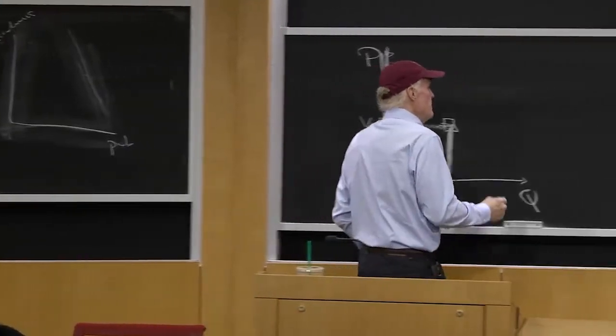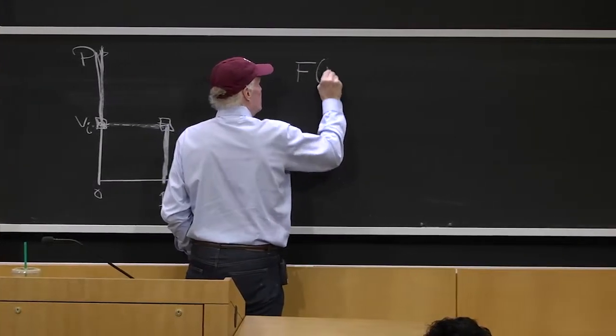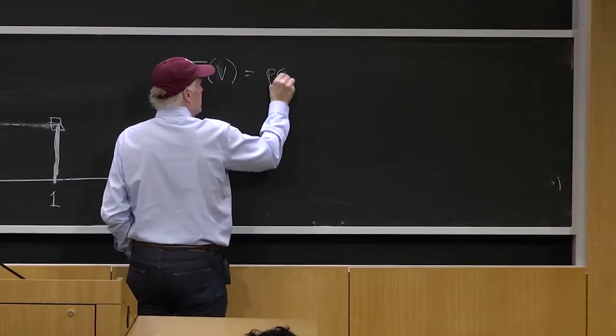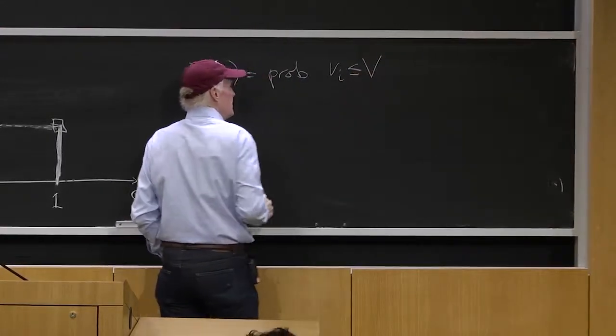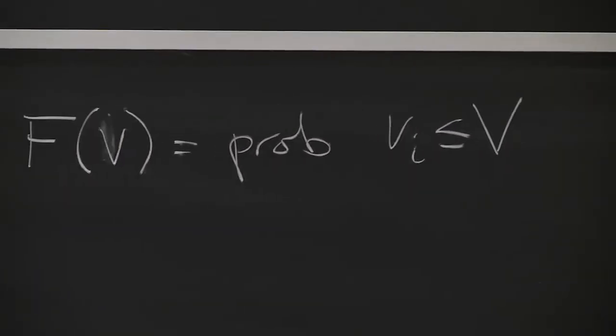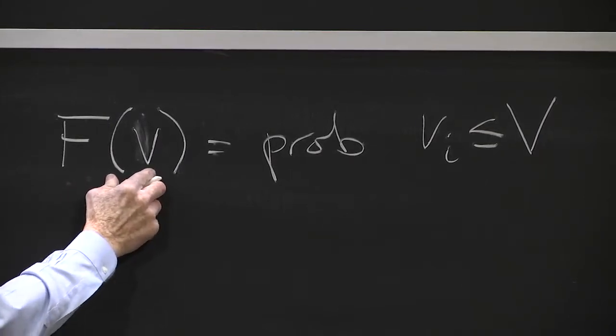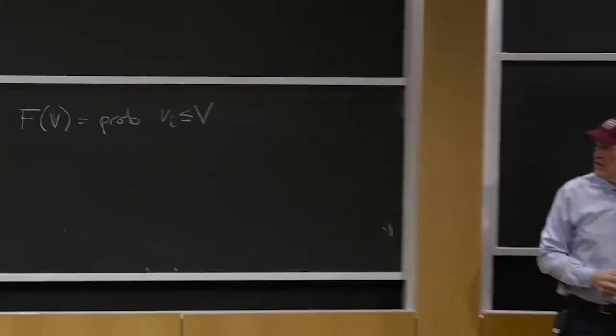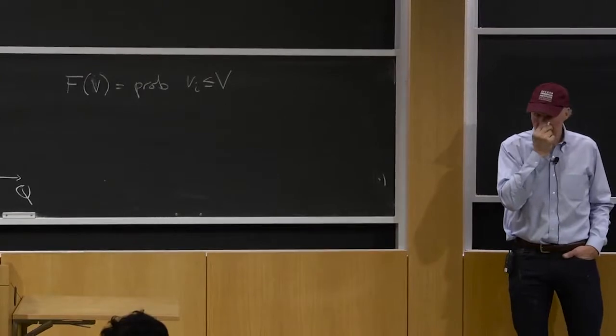So then you might think about there being a distribution function F(v) equals the probability that vi is less than or equal to v over some population. That is, the fraction of the population that has a v less than or equal to vi less than or equal to v. It's just the cumulative distribution function of v in the population.